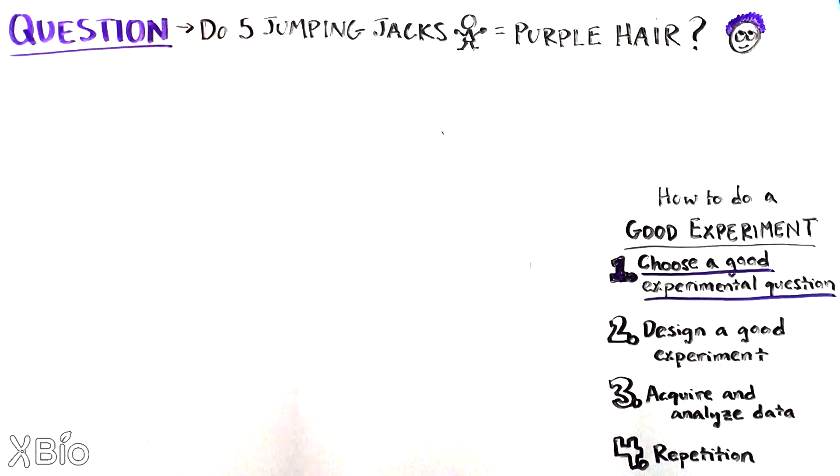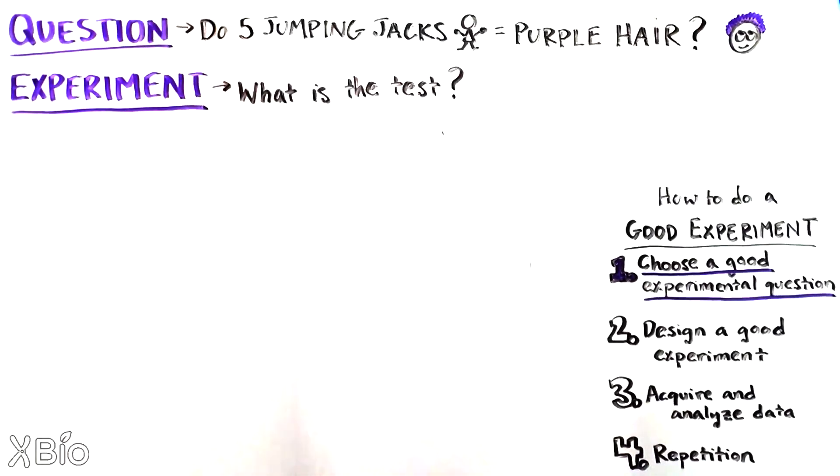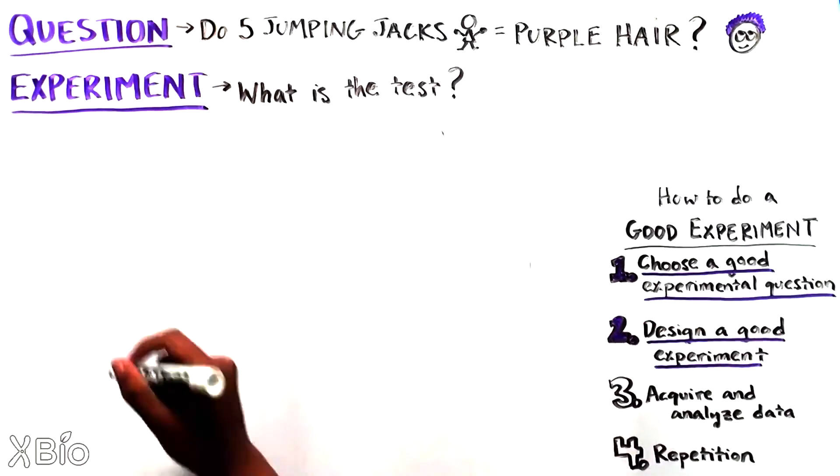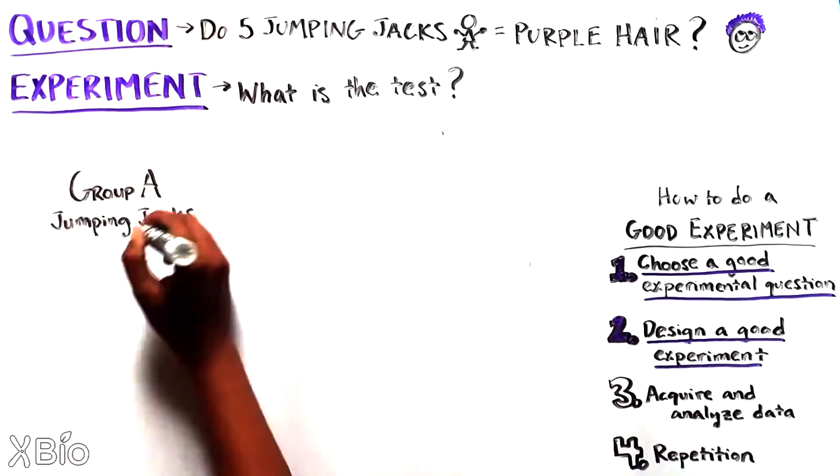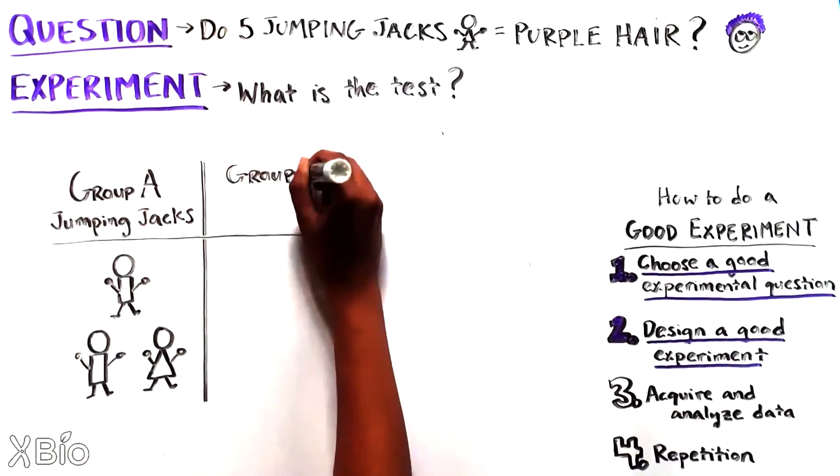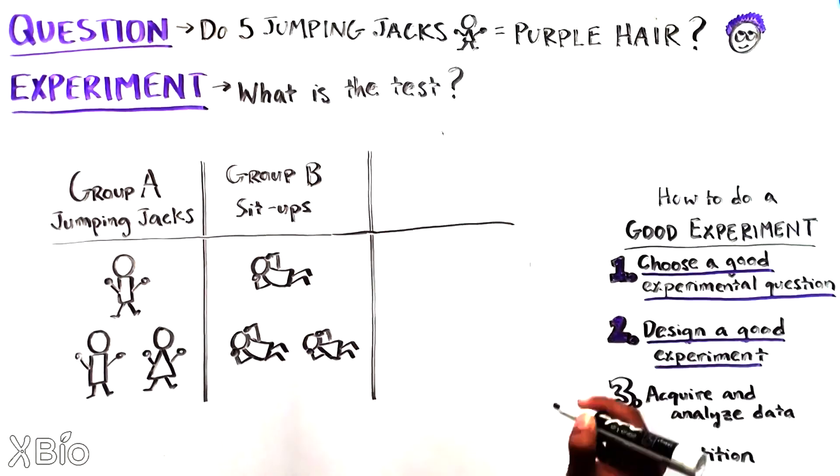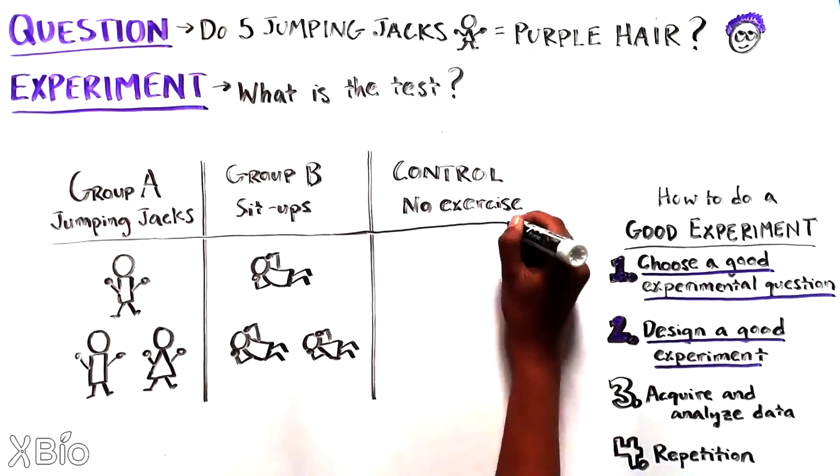There are a few key things we must think about. First, we need to clarify how we plan to test the question. We will need a group of people who will do jumping jacks, but it's also essential to have a group of people who do a different exercise, say five sit-ups. And finally, a group of people doing no exercise at all, the control group.